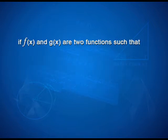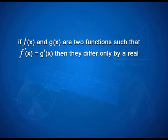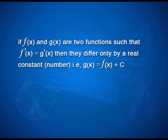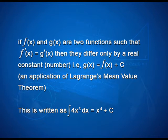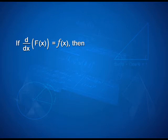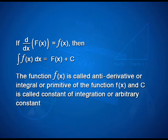For if f(x) and g(x) are two functions such that f'(x) = g'(x), then they differ only by a real constant number, that is g(x) = f(x) + c — an application of Lagrange's mean value theorem. That is, the integral of 4x³ dx is equal to x⁴ + c. This leads to: if d/dx of F(x) = f(x), then the integral of f(x) dx = F(x) + c. The function F(x) is called the antiderivative or integral or primitive of f(x), and c is called the constant of integration or arbitrary constant.